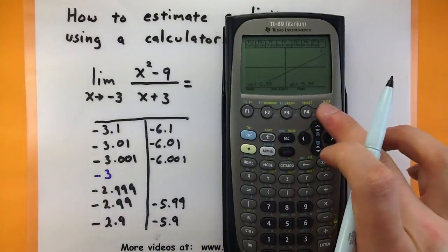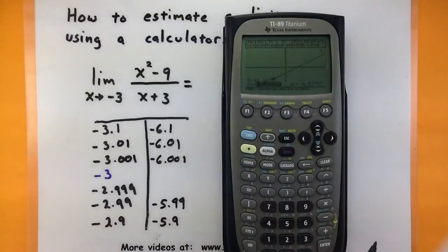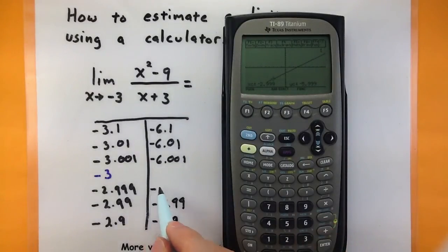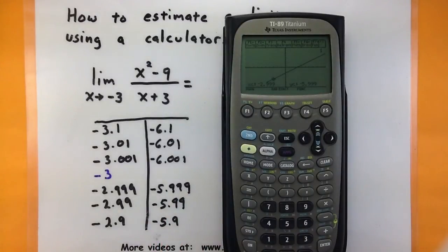And one more value, negative 2.999, so negative 5.999. There we go.